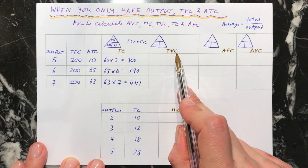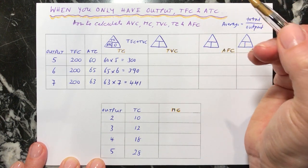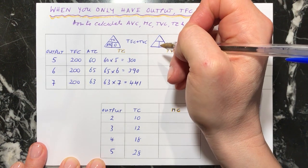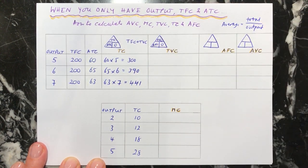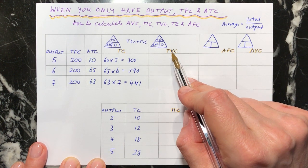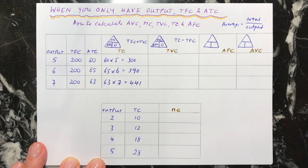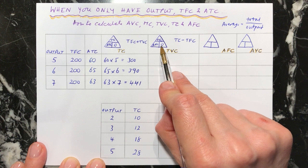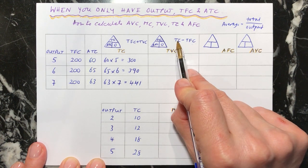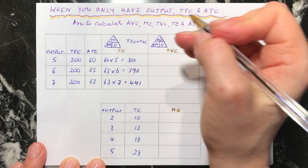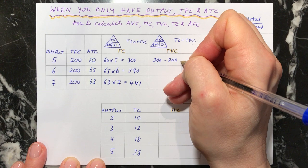Then let's go on to total variable cost. We know that total variable cost equals average variable cost times output, but we can also use the formula: total variable cost equals total cost minus total fixed cost. We can't use the first formula yet because we haven't worked out average variable cost. So using TC minus TFC: our total cost is 300, take away total fixed cost of 200, gives us 100.